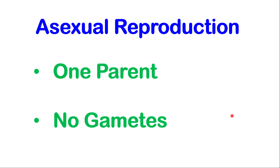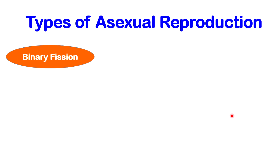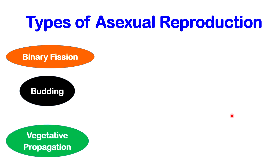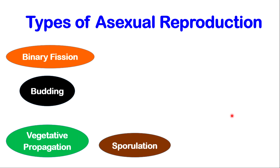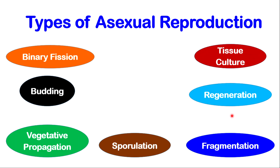Asexual reproduction involves one parent and no need for any gametes. There are many different types of asexual reproduction. We will look at a few: binary fission, budding, vegetative reproduction or propagation, sporulation, fragmentation, regeneration, tissue culture, and cloning.